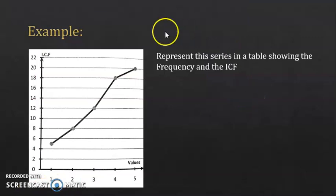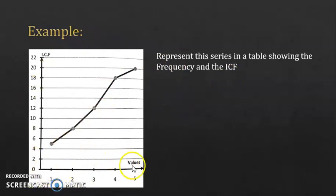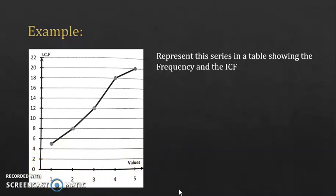Now, this is the last example. This diagram shows the polygon of increasing cumulative frequency, and here you have the values of the character. We don't know what the character corresponds to — for example, age or grade — but it doesn't matter since we have the values. Represent this series in a table showing the frequency and the increasing cumulative frequency. Pause the video and try to do the table by yourself. For this polygon, you have the values and the increasing cumulative frequency, and you're also asked to show the frequency, so you'll have three rows.